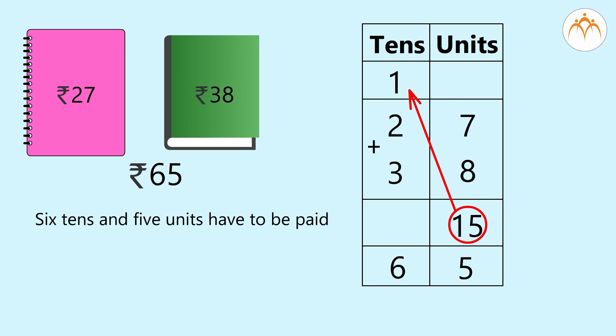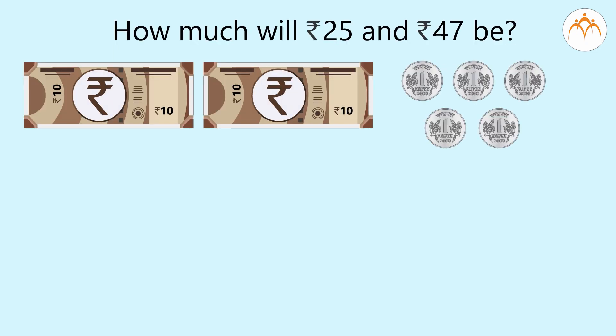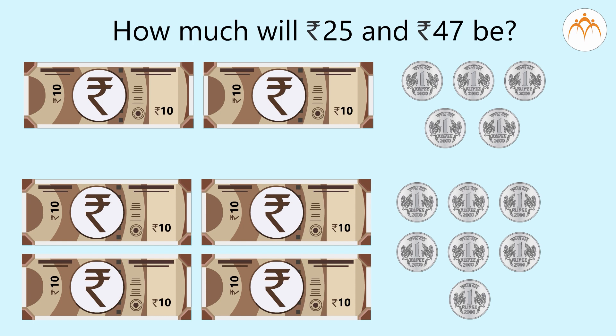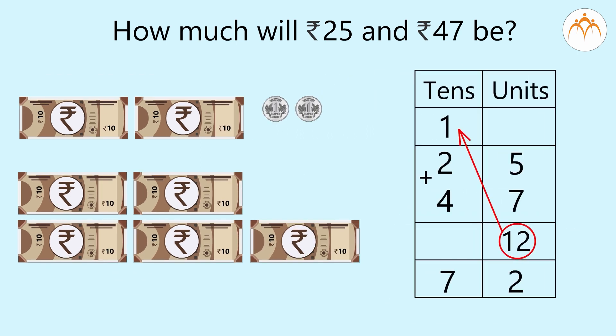We shall also use currency notes and coins for addition. For example, how much is 25 rupees plus 47 rupees? 2 notes of 10 and 5 coins of 1. 4 notes of 10 and 7 coins of 1. 5 and 7 equals 12 coins, that is 1 ten and 2 units. So, use 1 note of 10 rupees for 10 coins. Count the currency notes of tens. So, now we need 2 plus 4 plus 1 equals 7. So, we need 7 notes of 10 rupees and 2 coins of 1 rupee, that is 72 rupees.